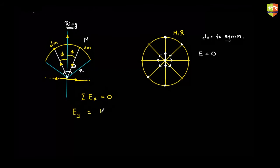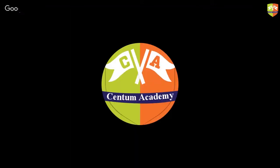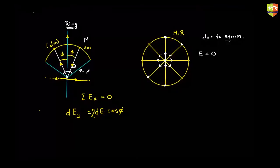The net contribution will be dE times cos(φ). For two symmetric masses at a time, the total dEy will be 2 dE cos(φ) — dE cos(φ) from this mass and dE cos(φ) from that mass.